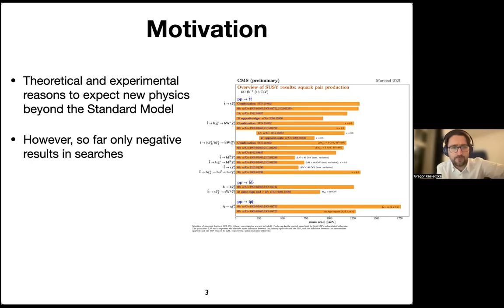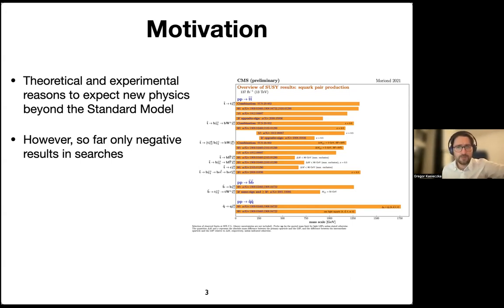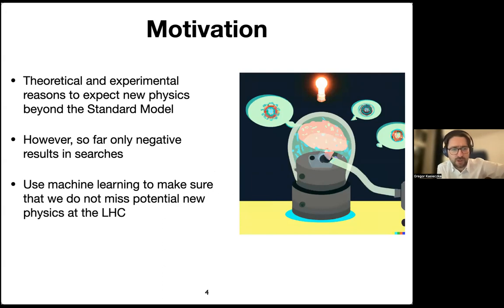If we look at the results of the large search program of the LHC, there are many negative results. Of course, there was the discovery of the Higgs boson, but overall the search program is ruling out exceedingly large portions of phase space. This is valuable because it gives input to model building, but the real breakthrough would be a direct discovery of a new particle. A large fraction of my research revolves around using machine learning to ensure we don't miss a potential discovery.